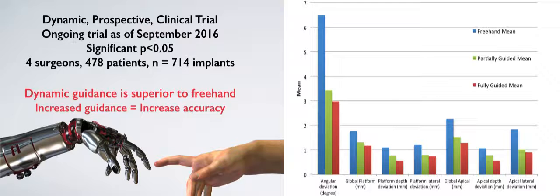You can see the p-value is .05. And from blue, which is freehand, to red, which is fully guided, in every measure as we improve in guidance, we get more accuracy and precision.